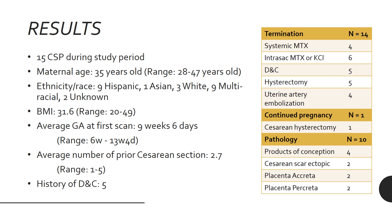We had 15 cases of CSP during the study period. The average age was 35 years old. The cohort was predominantly Hispanic, of mixed race, and obese. The average gestational age at first scan was nine weeks and six days. The average number of prior cesarean sections was 2.7, with a range from one to five. Five patients had a history of D&C.